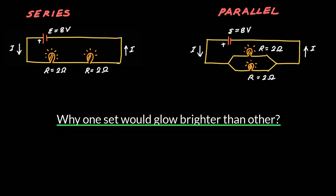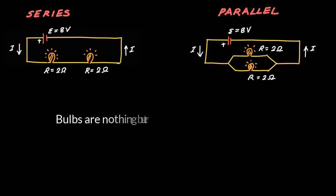To answer this question, the first thing we need to understand is that bulbs are nothing but resistors that are glowing. Let me actually go ahead and make them look like resistors. Therefore, if we can find current through each bulb or resistor, we can find the power delivered by using the formula P is equal to I square R.